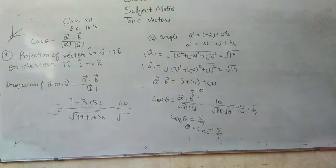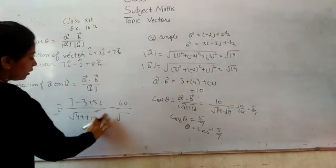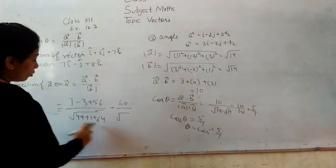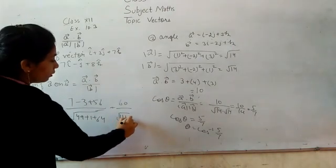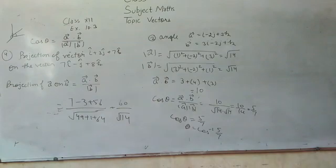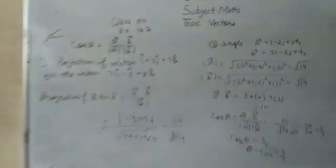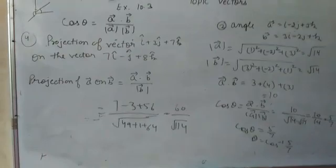Wait, sorry. 7 squared is 49, minus 1 squared is 1, 8 squared is 64. So we have root of 49 plus 1 plus 64 equals root 114. So the projection is 60 by root 114. This is the projection of vector a on b.